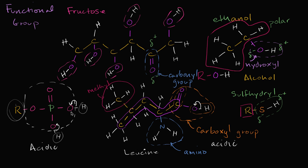This is an overview of the functional groups you'll see throughout biology. When you encounter big, complex molecules, you can break them down: there's a hydrocarbon chain, I see a sugar with a bunch of hydroxyls and a carbonyl group, I see an amino group, I see a carboxyl group. You can then think about whether different parts of the molecule are acidic, polar, or have different functions.